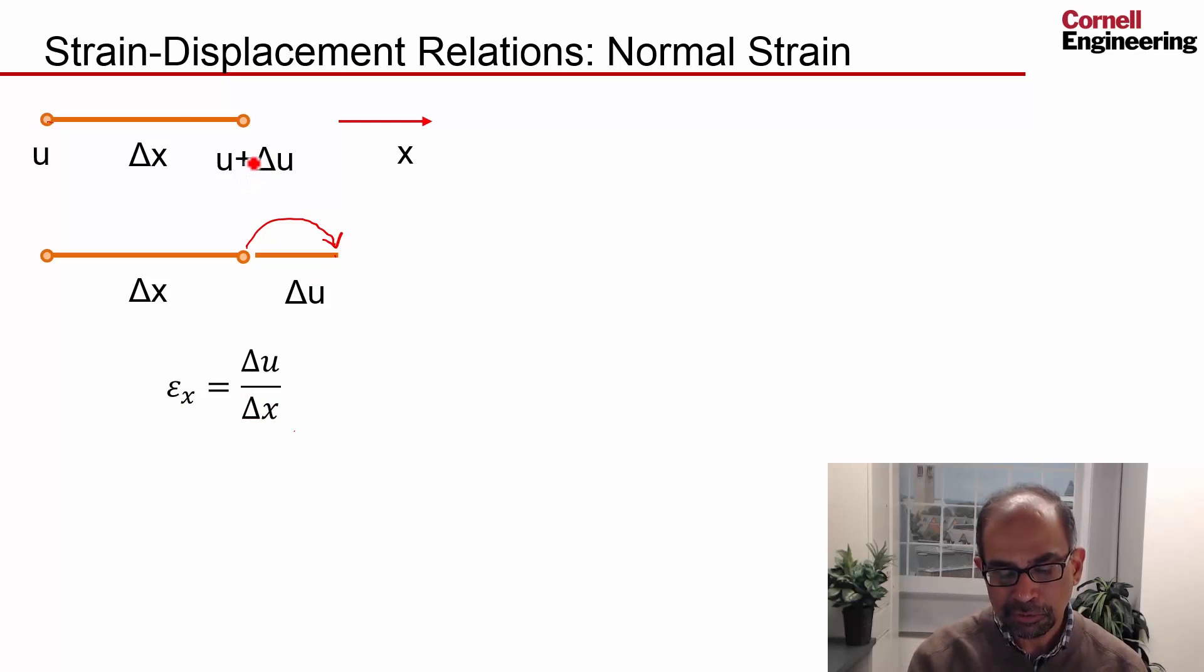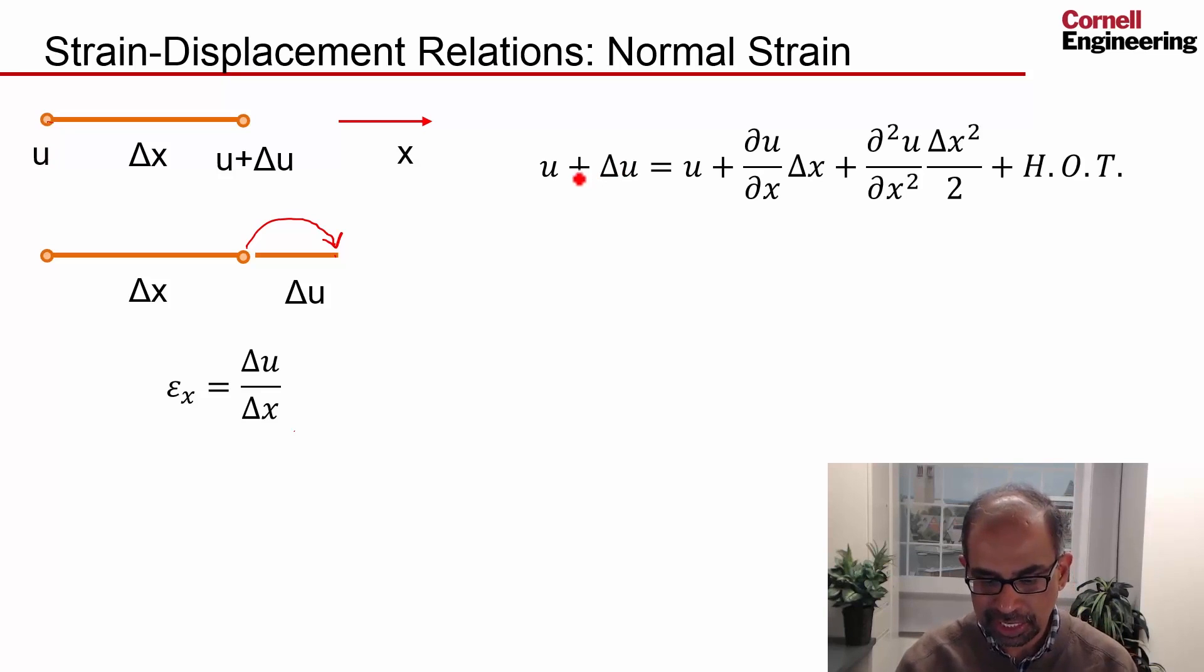We do the same trick as before - we can write this displacement using a Taylor series expansion. The Taylor series expansion is such a key idea when deriving these differential relations. So you get u + ∂u/∂x·Δx + ∂²u/∂x²·Δx²/2 + higher order terms.